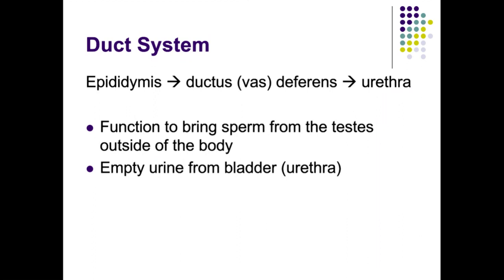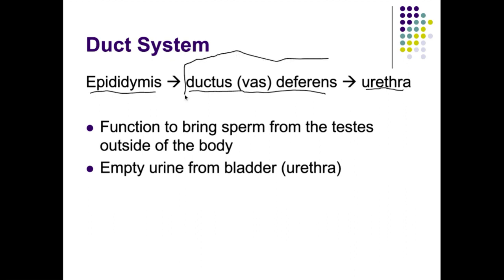There is a duct system that brings semen from inside the body to the outside. It starts with the epididymis, where sperm are stored until ejaculation occurs. If ejaculation doesn't occur, the sperm are simply phagocytized and broken down. Sperm then pass via peristalsis through the vas deferens and then to the urethra. In males, the urethra has three different parts: the prostatic, membranous, and spongy or penile urethra. Sperm are not swimming — they are pushed via peristaltic waves.